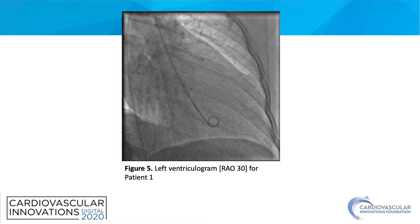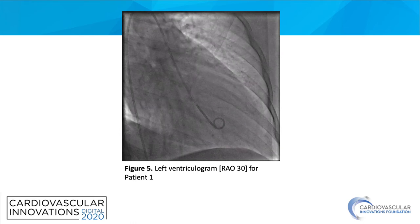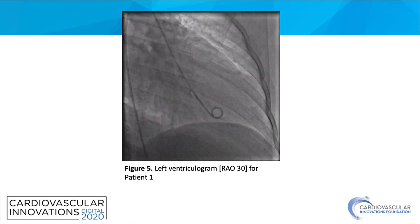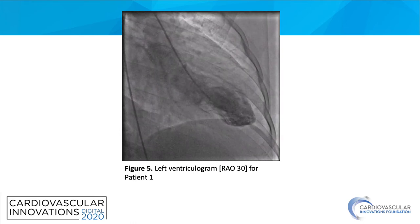A left ventriculogram was also done for patient 1, as seen in figure 5. This patient's left ventriculogram demonstrates severe apical hypokinesis and distal inferior akinesis, with the rest of the walls having normal function. We can see the video for that as well.